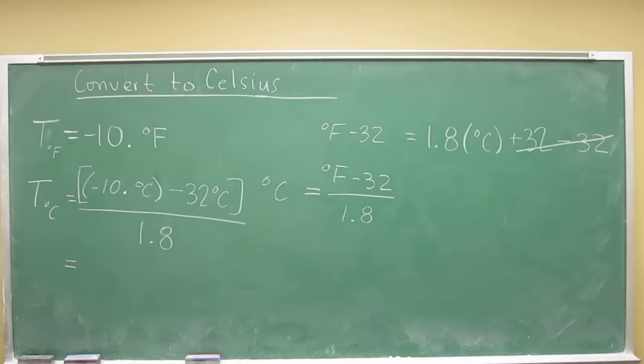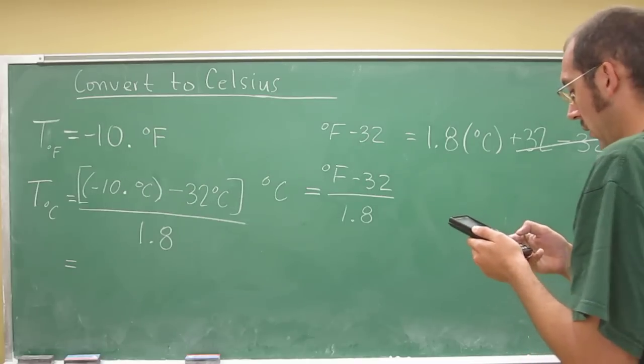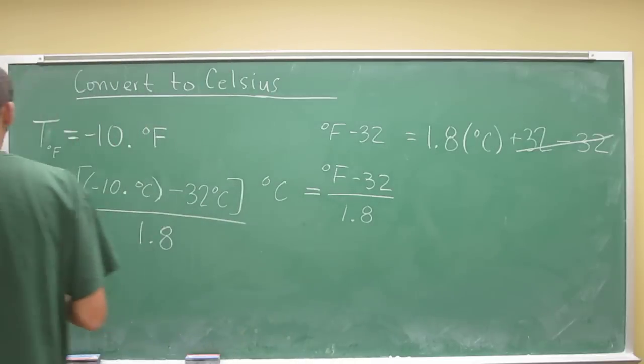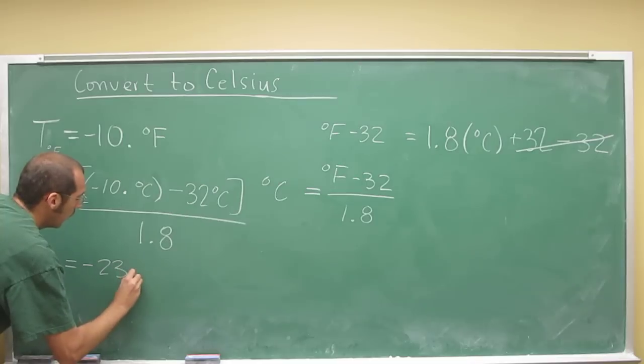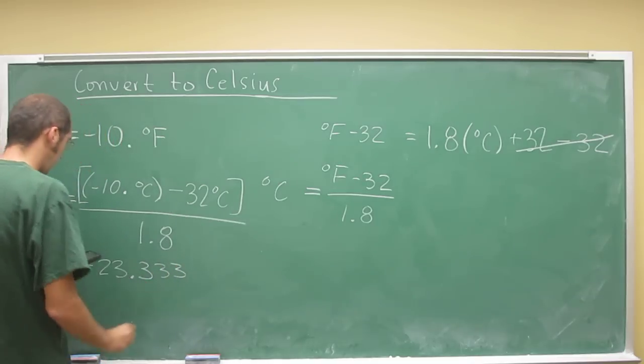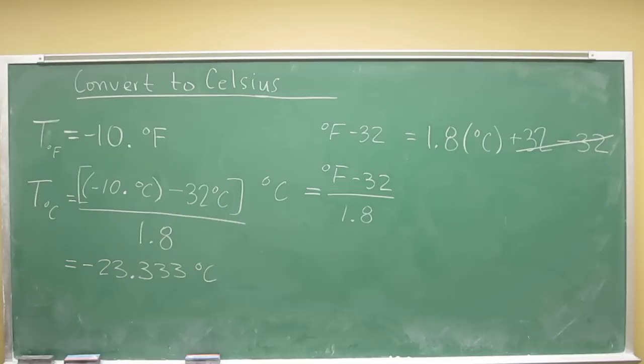And then let's get our calculator out. So, negative 10 minus 32 divided by 1.8. And then gives me on my calculator negative 23.3333 repeating until infinity degrees Celsius. But that's not what we're going to use. Why?